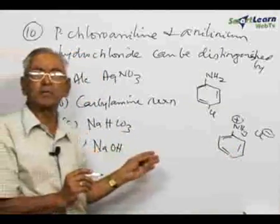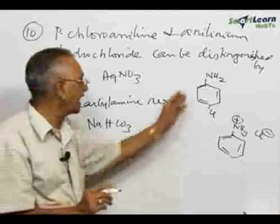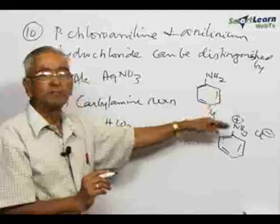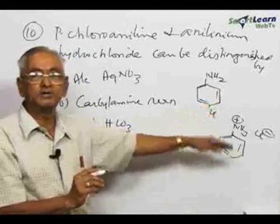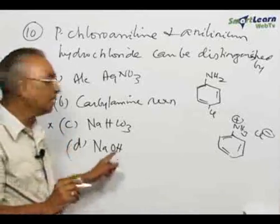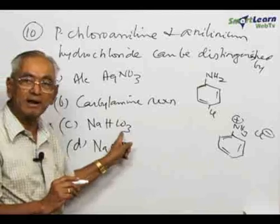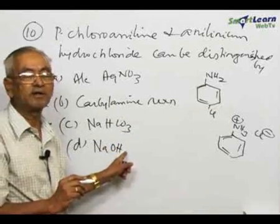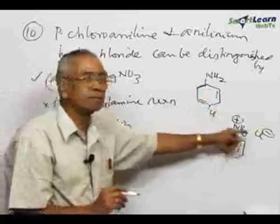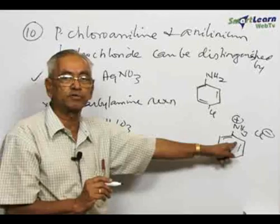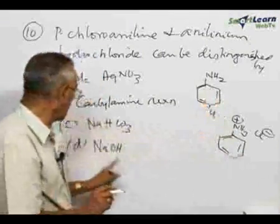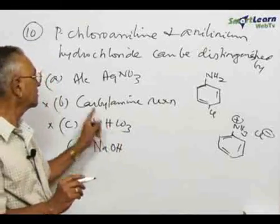The third option is sodium bicarbonate, which is a mild base. Since both these compounds are also bases — anilinium hydrochloride being an acidified form of a base — sodium bicarbonate will not distinguish between the two. Similarly, sodium hydroxide, being a stronger base, will also not distinguish between them, as a free amine can be generated from both on alkalization. So neither sodium bicarbonate nor sodium hydroxide is useful here.